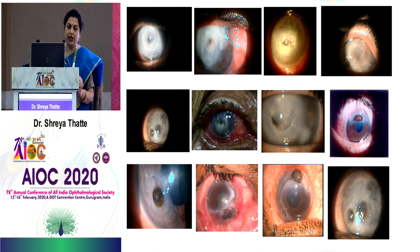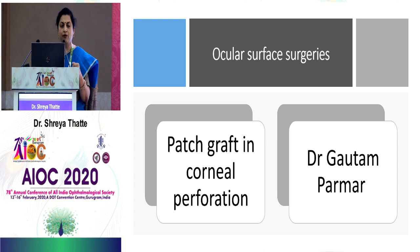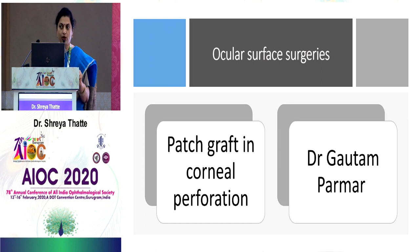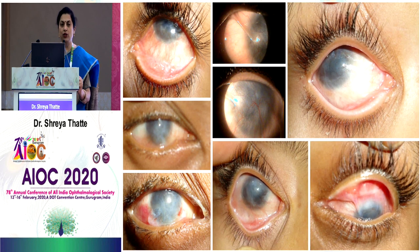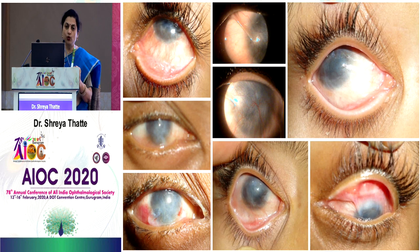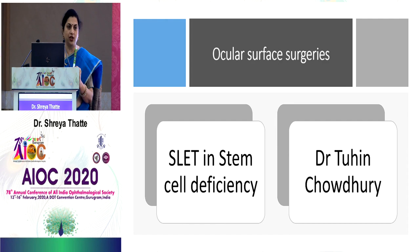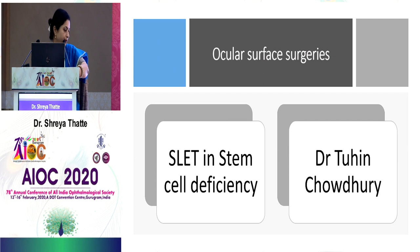We see different types of corneal perforation — peripheral or central — requiring different shapes to cover or patch the perforation. Dr. Gautam Parmar will explain how to do patch grafts in these cases. Dr. Tuhin Chaudhary will address total stem cell loss, most often following chemical burns, and the role of SLET in stem cell deficiency. We welcome all speakers and start with corneal tear repair by Dr. Aditya Pradhan.